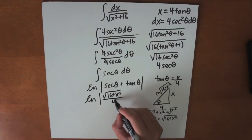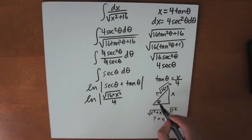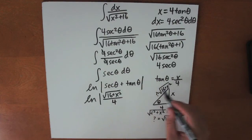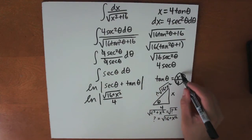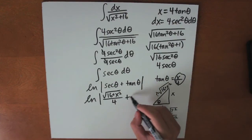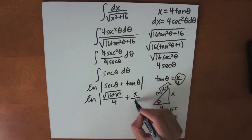So our final answer is the natural logarithm of the square root of 16 plus x squared over 4, plus x over 4.